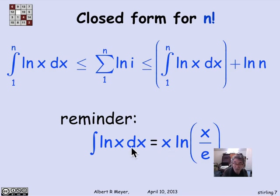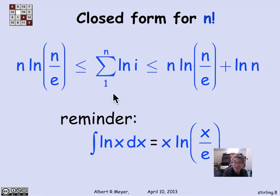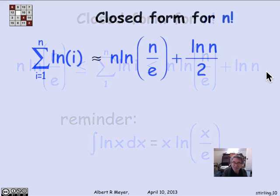Plugging in this value for the indefinite integral of log of x and using the bounds 1 to n, what we come up with is that the sum of the logs is bounded between n times log n over e and n times log n over e plus log of n. So pretty tight bounds. What that means is that informally speaking, the sum of the logs is approximately n log n over e plus half of log n.